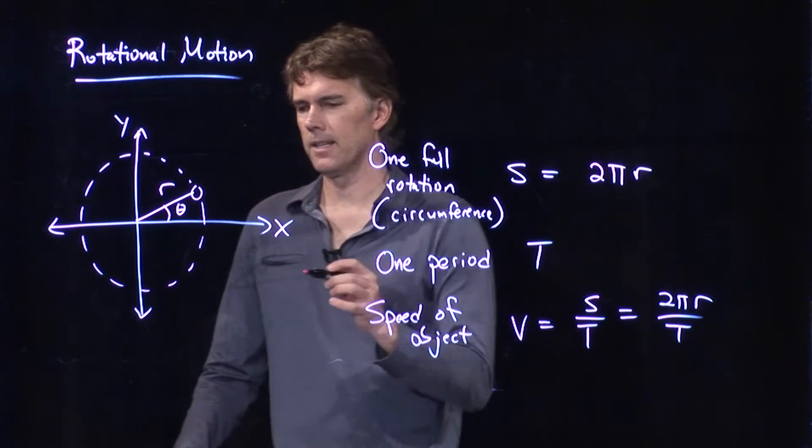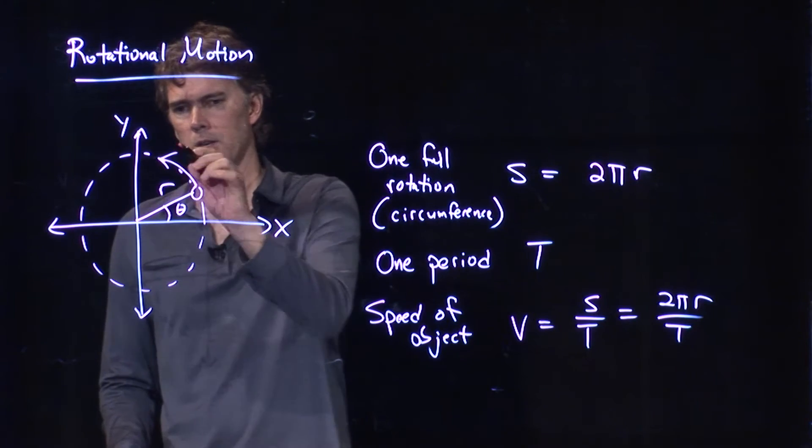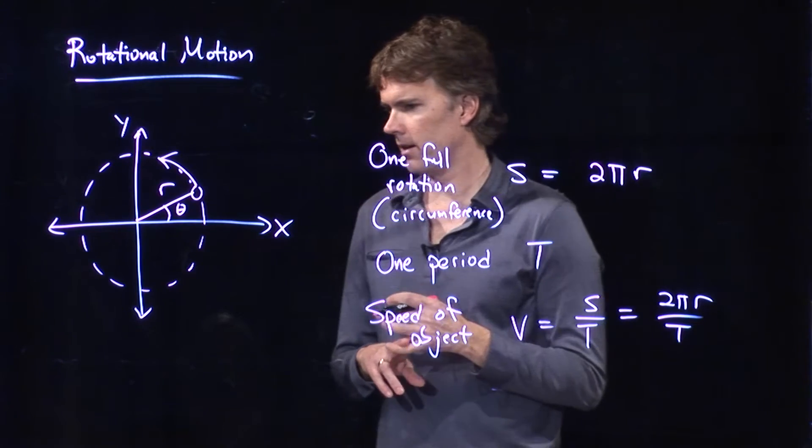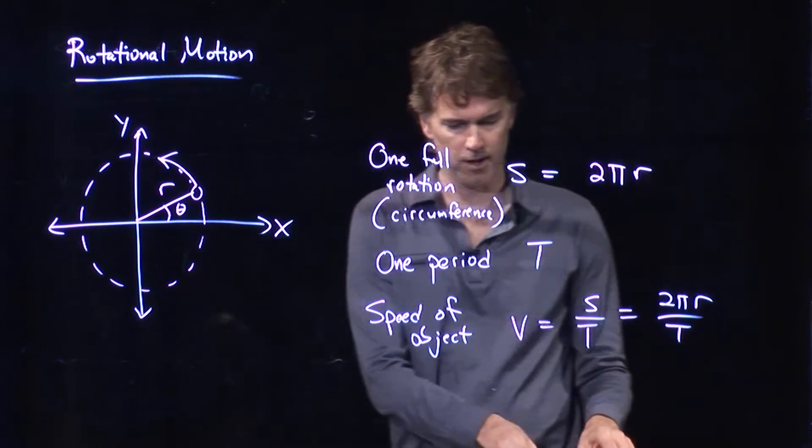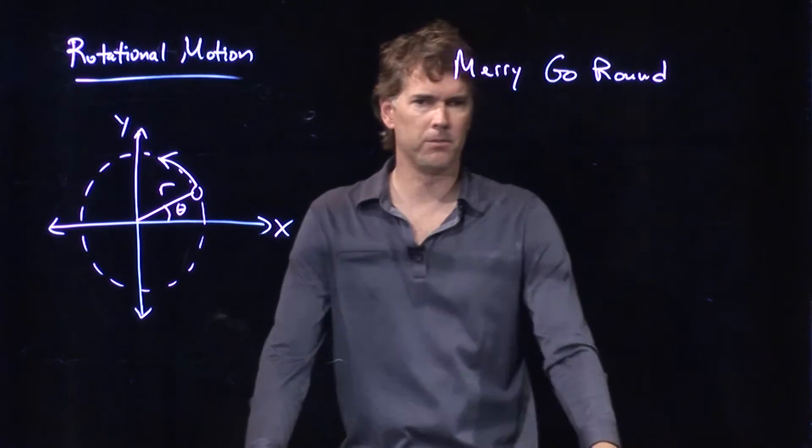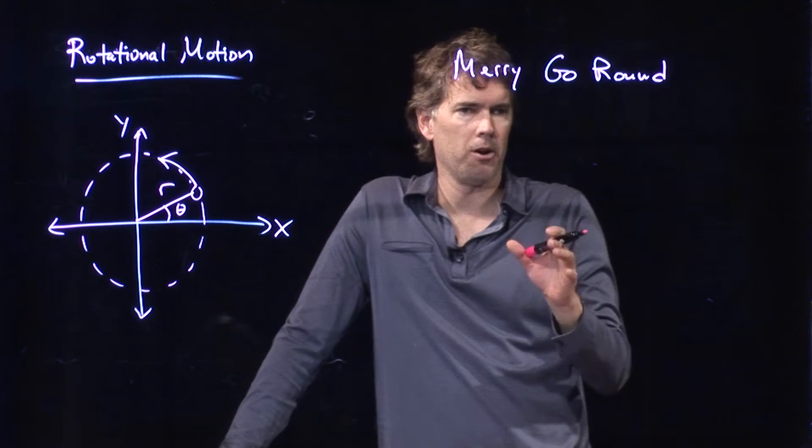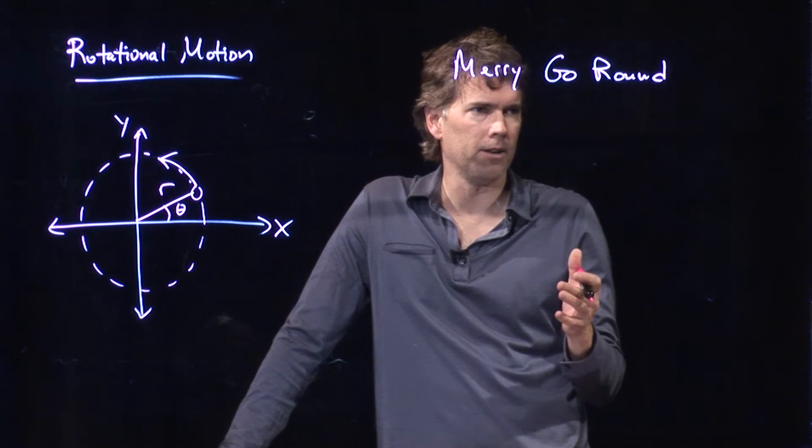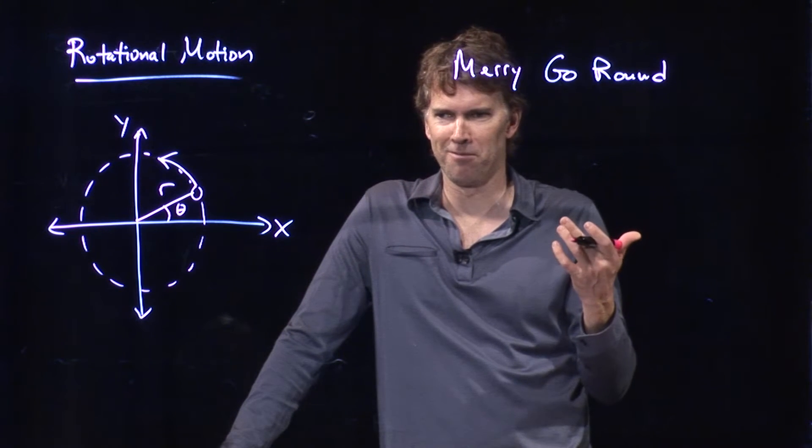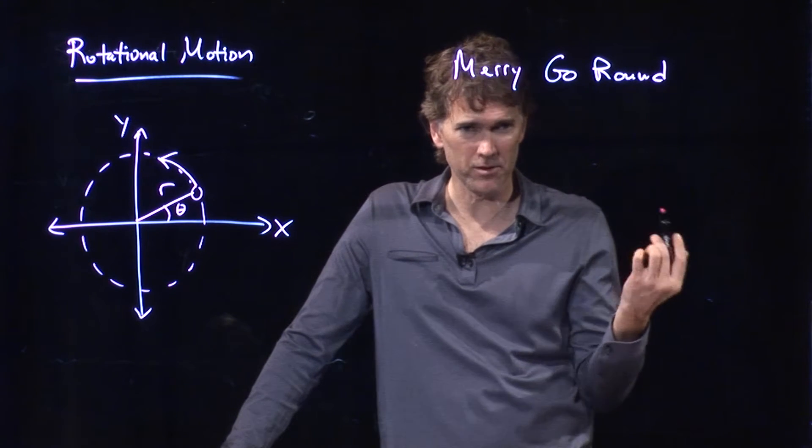So our object is now going to be you sitting on a merry-go-round, and you are going around on this merry-go-round. We tell you the radius of the merry-go-round and the period, and we need to figure out what our speed is. Let's try some different numbers. Let's say that the merry-go-round goes around, I don't know, what's a typical period? I'm trying to remember Disneyland with my kids. Maybe 10 seconds for a once-around merry-go-round?